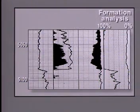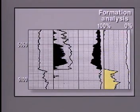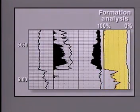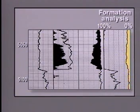In track 4, on the right of the log, on a scale of 0 to 100 percent, we see a formation analysis showing the clay fraction, a matrix solids fraction, and the porosity fraction in white. Note that our productive interval is calculated to be shale-free.